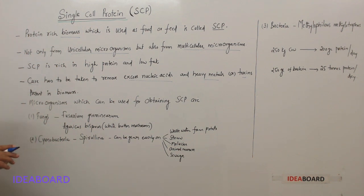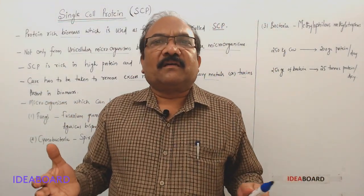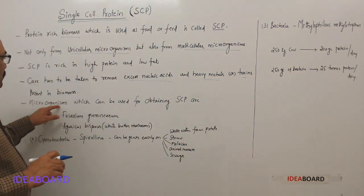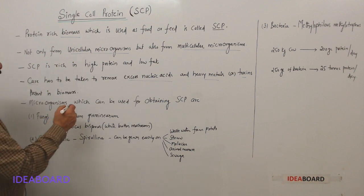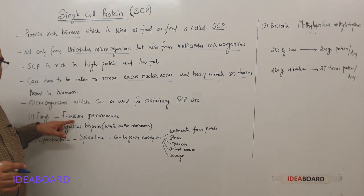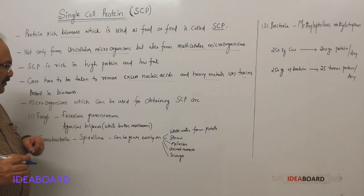Now let us discuss what are the microorganisms which can be used for obtaining SCP. Fungi, cyanobacteria, and bacteria. These fungi include Fusarium graminearum and Agaricus bisporus is another fungus which is popularly known as mushrooms.